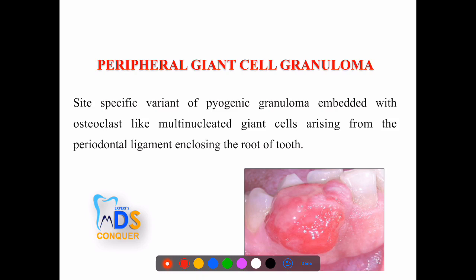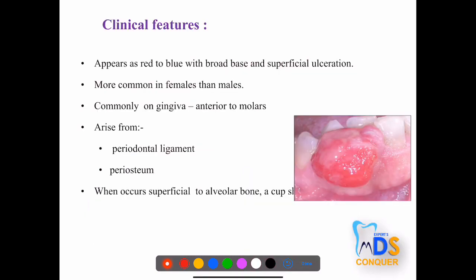Next is peripheral giant cell granuloma, which is embedded with multi-nucleated giant cells and is thought to arise from the periodontal ligament present close to the root of the tooth. Clinically it appears as a reddish-blue lesion with broad base and superficial ulcerations, most common in females, arising from the periodontium.